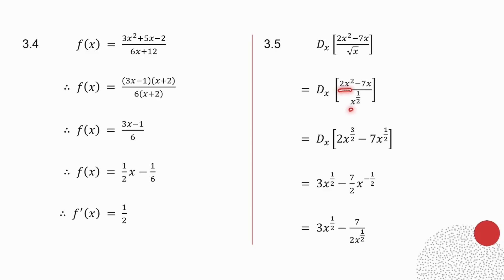So 2x squared divided by x to the half, subtract your exponents, you get 2x to the power 3 over 2. Minus 7x divided by x to the half is minus 7x to the half. I wanted the derivative of that expression. All I've done is the exponent. All I've done is divide it. So this is still the original expression, just in a different form.